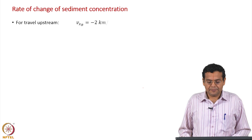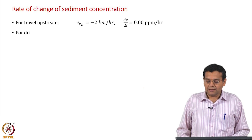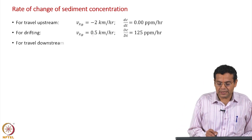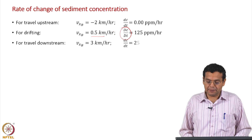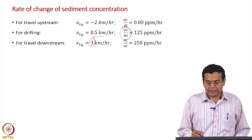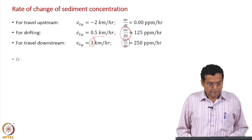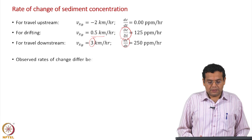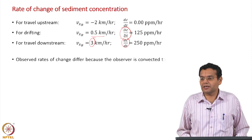To summarize: for travel upstream at −2 km/h (stationary observer), dc/dt = 0 ppm/hr. For drifting at 0.5 km/h, this is the substantial derivative of concentration = 125 ppm/hr. For travel downstream at 3 km/h, the rate of change of concentration = 250 ppm/hr. The observed rates differ because the observer is convected at different velocities.